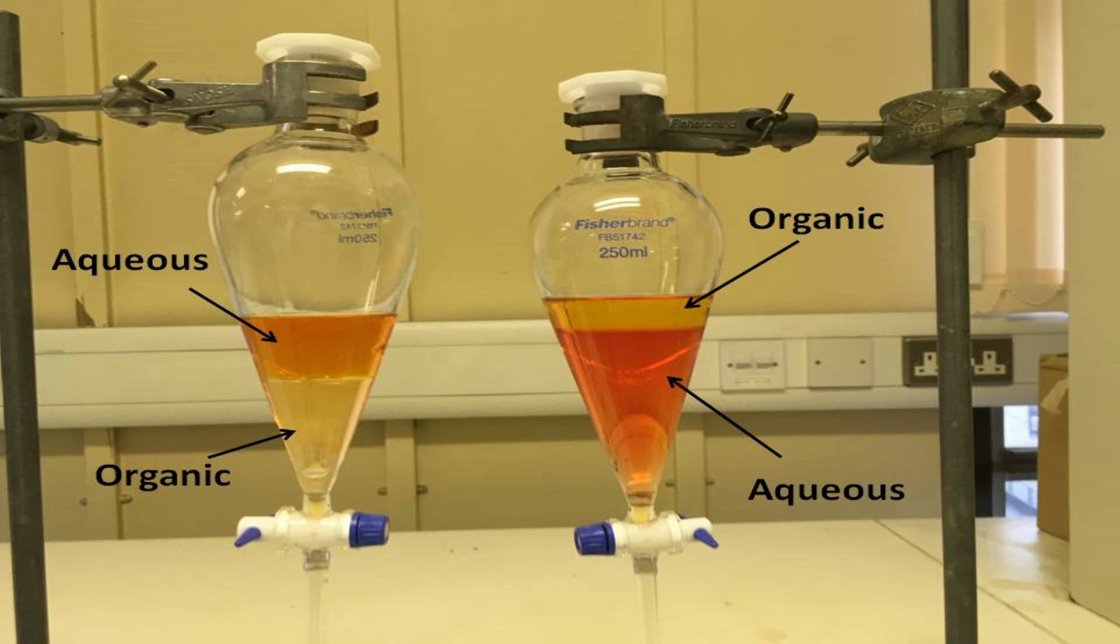But on the left-hand separating funnel, the orange aqueous phase forms the top layer, and the bottom layer is the yellow organic phase. This is because an organic solvent called dichloromethane, DCM, was added to water, and DCM has a density of 1.3 grams per centimetre cubed. Hence DCM is more dense than water, so the bottom layer on the left-hand separating funnel is the organic phase.